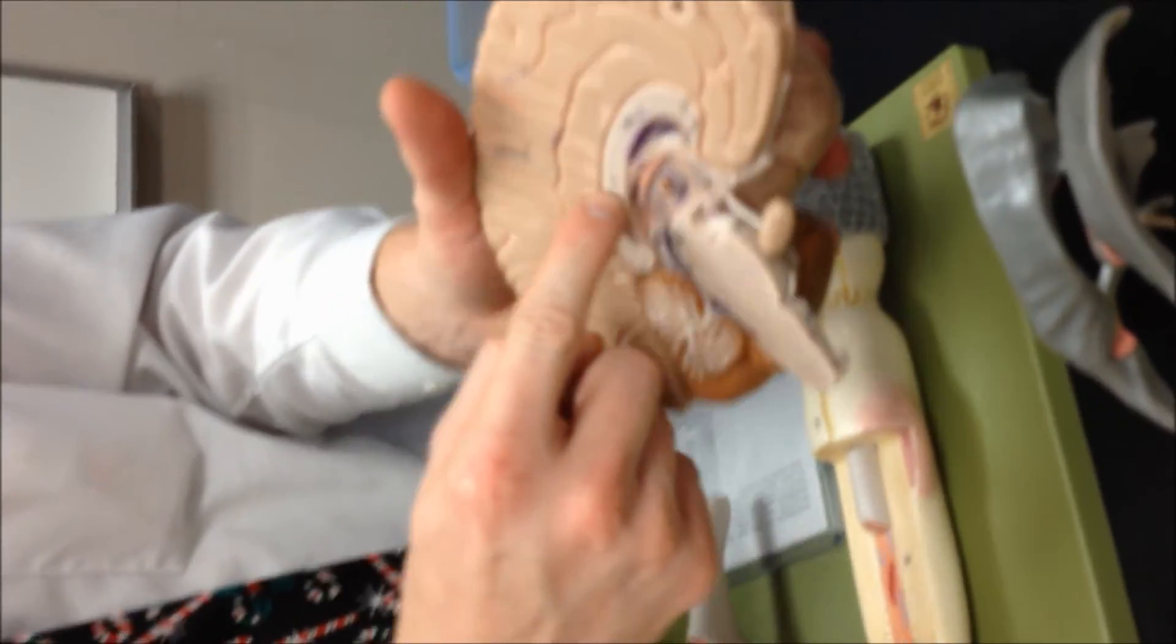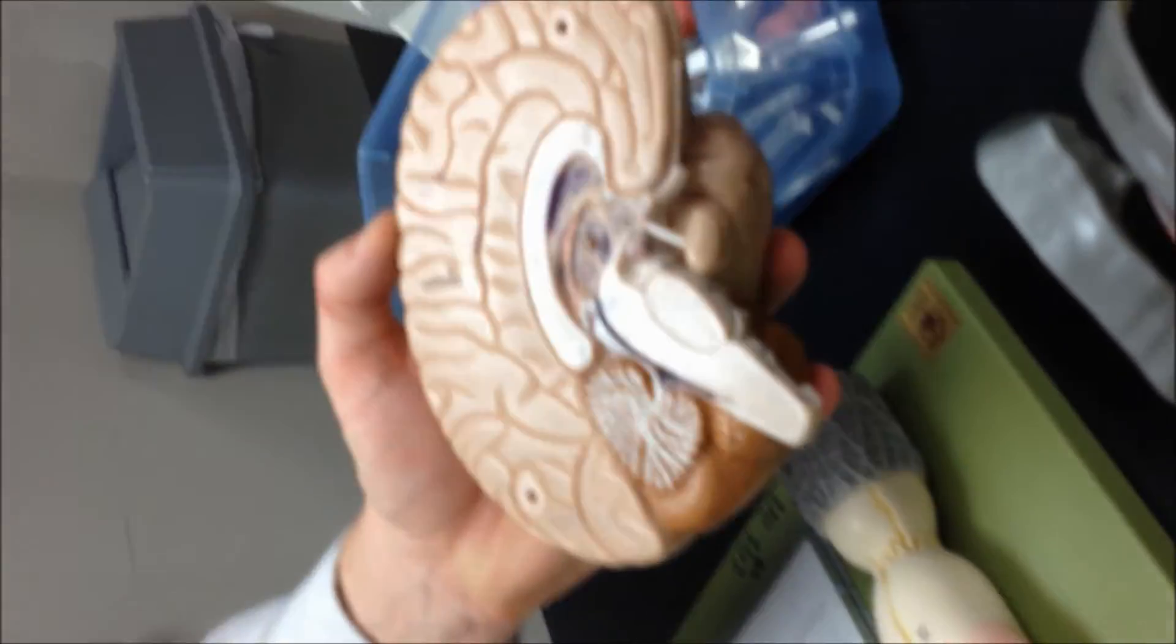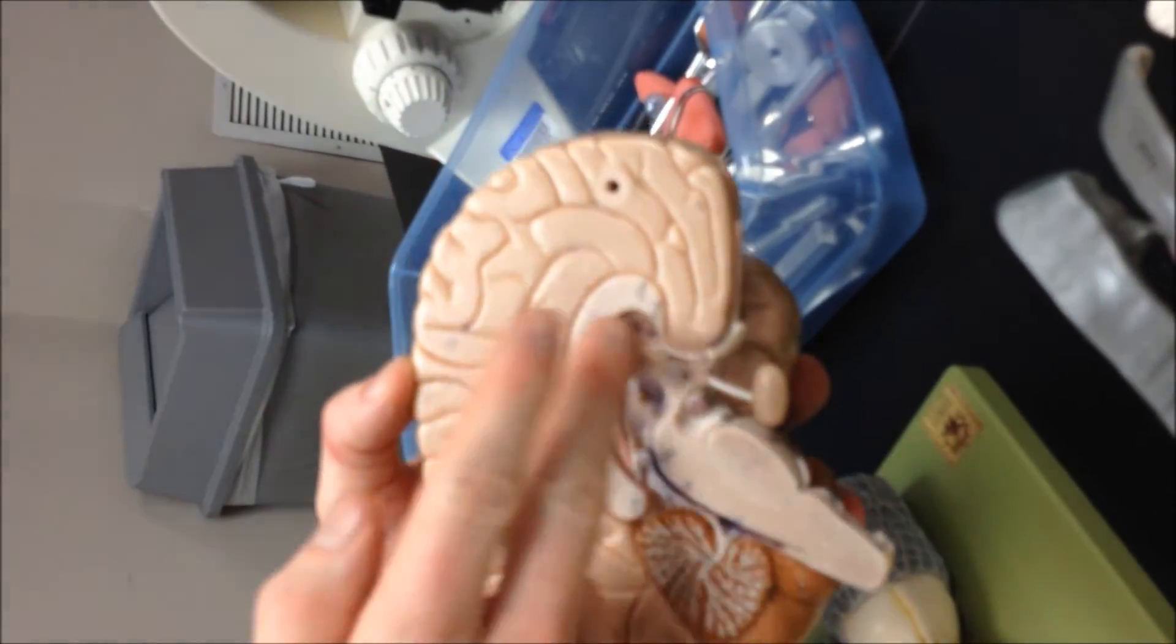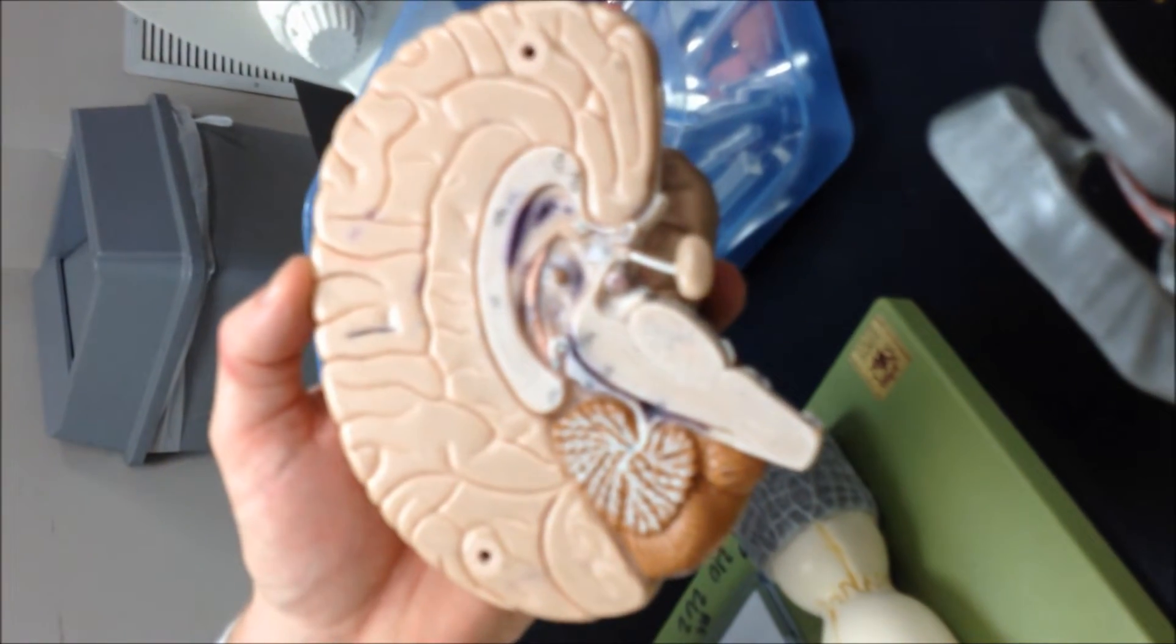All right. So we open it up. The main thing you see there is the corpus callosum. And beneath that, you would have the lateral ventricle, or the septum pellucidum, if there's a membrane covering it.